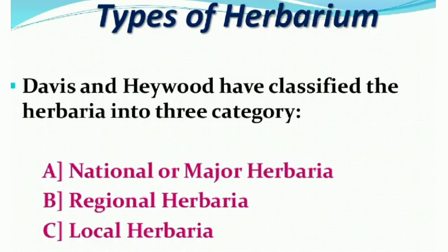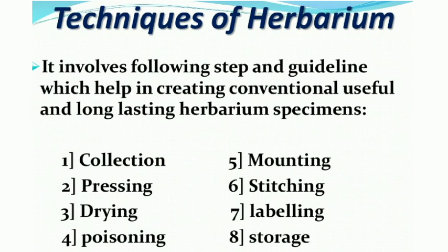We have three types of herbaria classified by Davis and Heywood. First, national or major herbaria — for a country. Second, regional herbaria — for a limited area like a state. Third, local herbaria — in every place like schools and colleges. We can prepare herbarium at local levels, and that is what we call local herbaria.